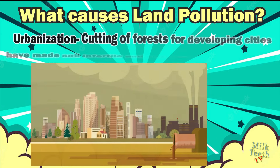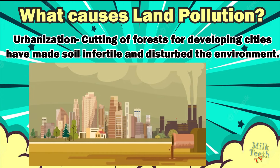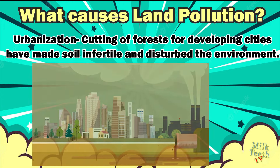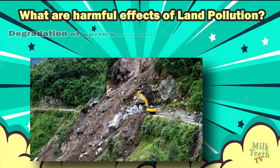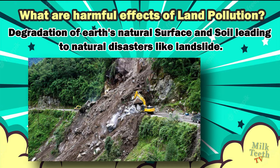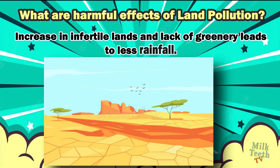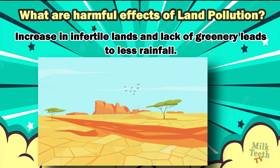Urbanization and cutting of forests for developing cities have made soil infertile and disturbed the environment. Nowadays there is a decline in agricultural lands which can lead to shortage of crops and food. Degradation of earth's natural surface and soil leads to natural disasters like landslides. Increase in infertile lands and lack of greenery leads to less rainfall, which in turn can lead to shortage of food, a shortage of healthy environment for animals, and also a shortage of oxygen in the air.